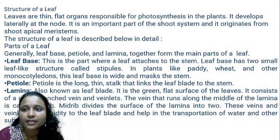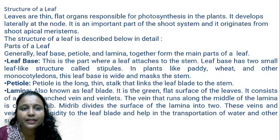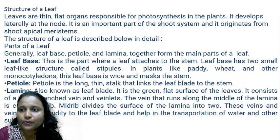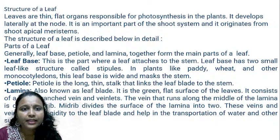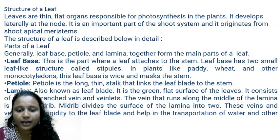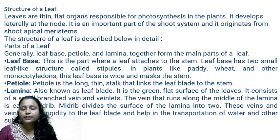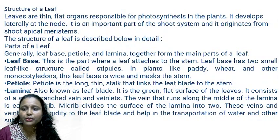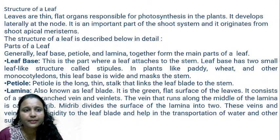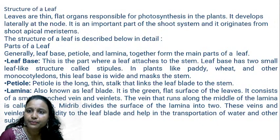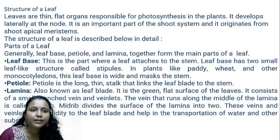The main characteristic of the leaf: leaves are thin, flat organs responsible for photosynthesis in the plant. They develop laterally at the node — laterally means the outer part. The leaf is an important part of the shoot system. In a plant, two parts are there: the upper part is called the shoot portion, and the lower part is called the root portion. At the shoot system, we see parts like stem, leaves, fruit, and flower. Below that is the root system, which forms only the root.